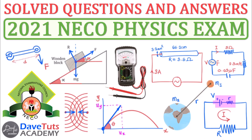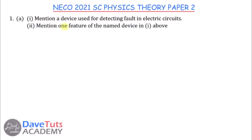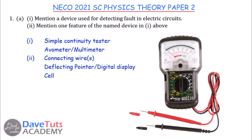Our work is set out for us — let's delve into the video. In our very first question, we are asked to mention a device used for detecting faults in energy circuits and then mention one feature of that named device. I would mention a multimeter, also called an avometer.